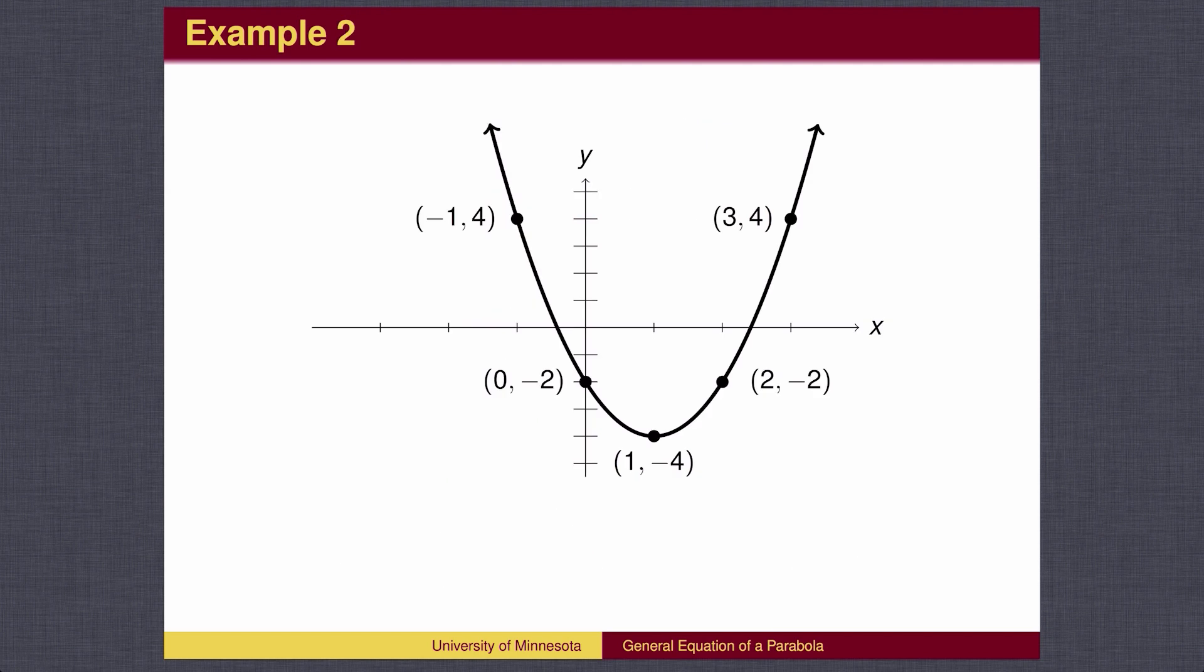Now let's write the equation given the graph. The vertex is at (1, -4), so to the standard equation y equals x squared, we will subtract 1 from x and add 4 to y.